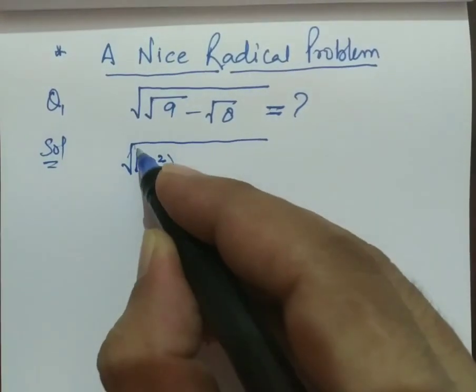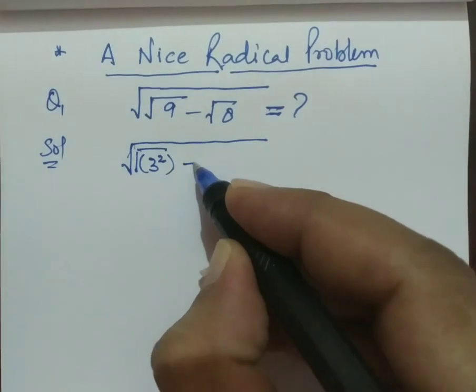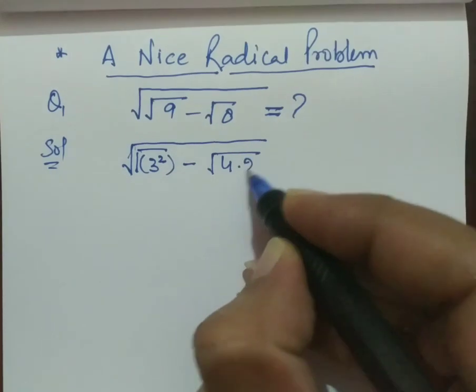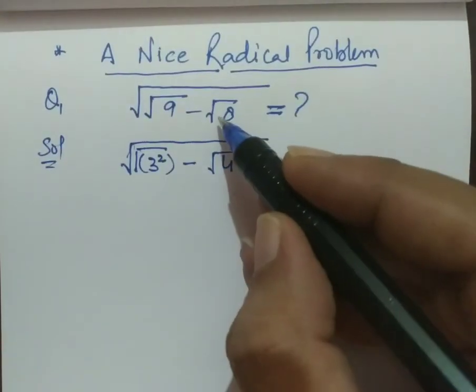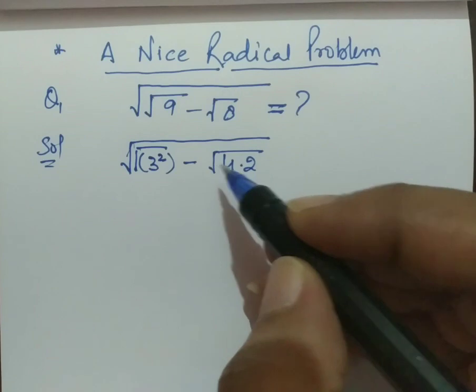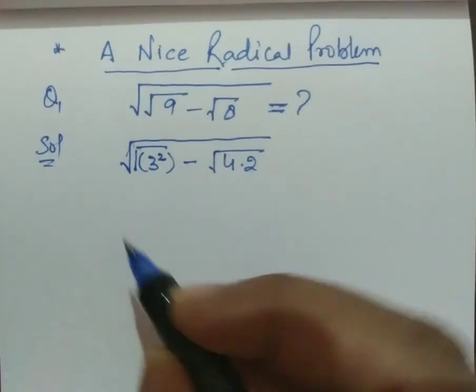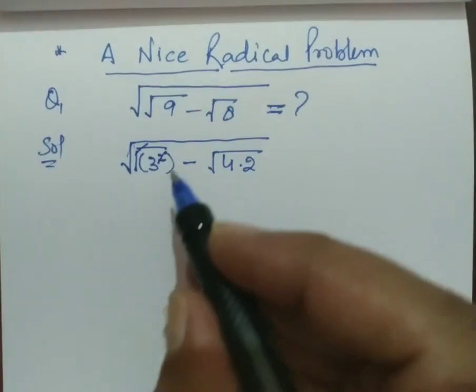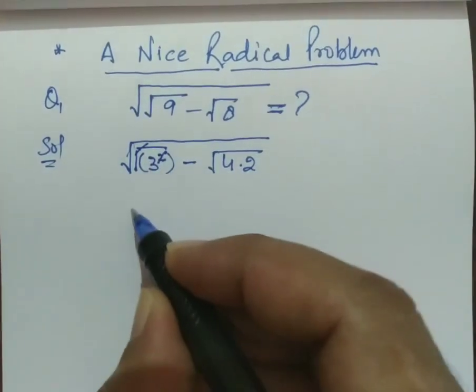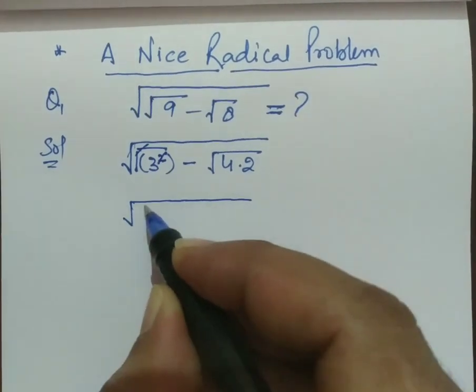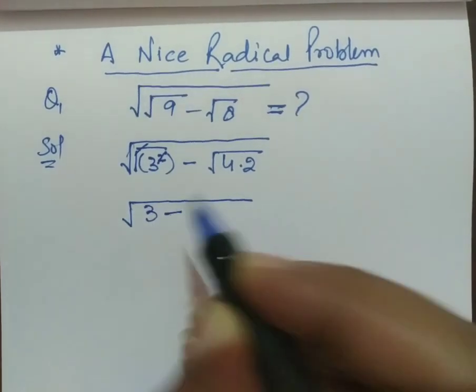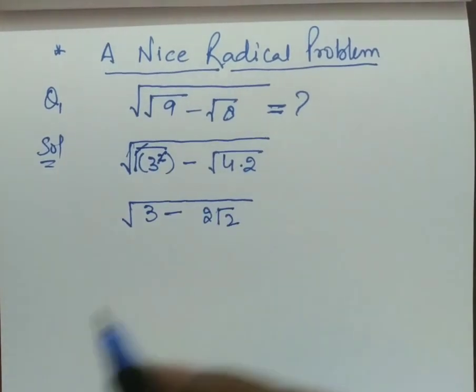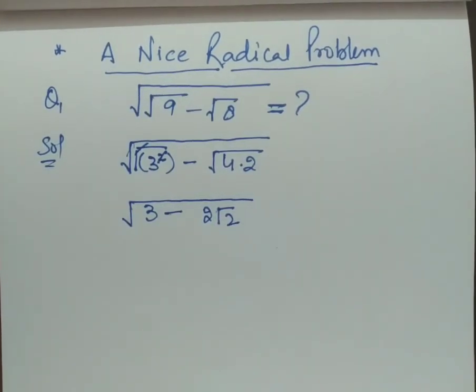Square root minus 4 times 2 is equal to 8. Then under root we know the square and root can be cancelled, so it got cancelled here: 3 minus square root of 4 is 2 root 2.